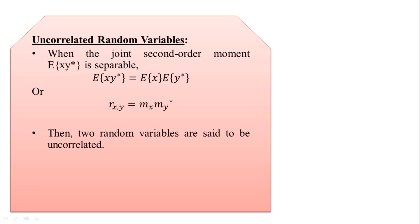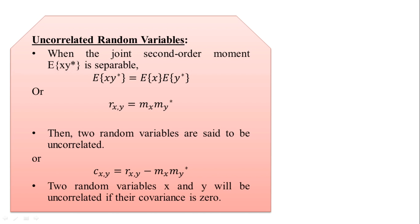Uncorrelatedness can also be defined using covariance. The covariance C_{x,y} between random variables x and y is given by C_{x,y} = R_{x,y} − m_x · m_y*. The two random variables x and y are uncorrelated if their covariance is zero. When we find the covariance equal to zero, we can call the random variables uncorrelated.